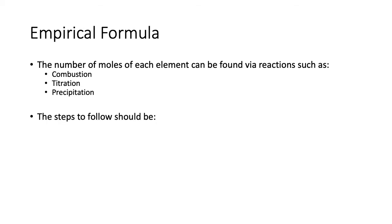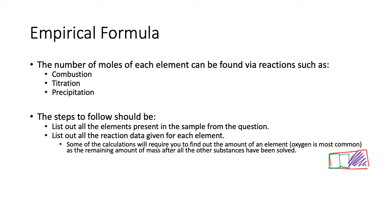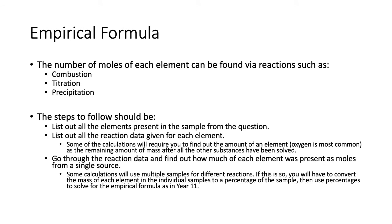The steps you should follow are: first, list out all the elements present, then list out all the reaction data. Some calculations may require you to find the amount of an element as the remaining mass — after all the other substances have been accounted for. So if you have the total amount and you know it's made of three components, whatever is left over from the total is the remaining substance. Sometimes you'll have to subtract amounts to get the mass of the last element.